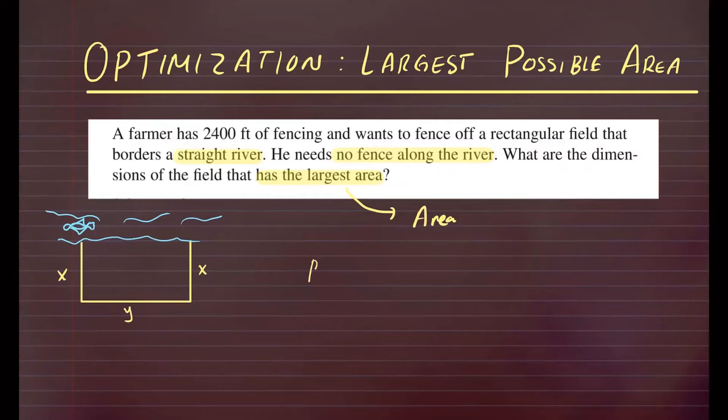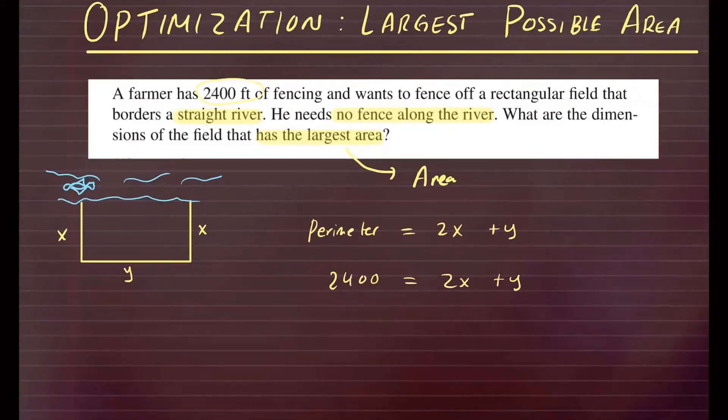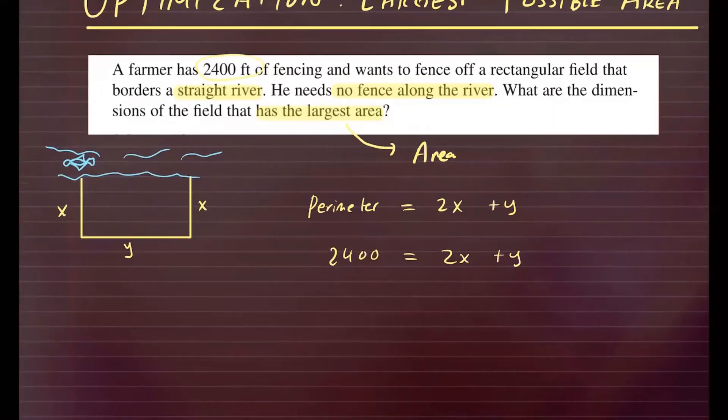So that means the perimeter of this rectangular figure is going to be sum of all the sides. So we have x plus x, that's 2x and a y. And since we have 2400 fencing, p is equal to 2400, so that is equal to 2x plus y, which means I can use this equation to modify the area formula, since that's the one we're going to optimize.